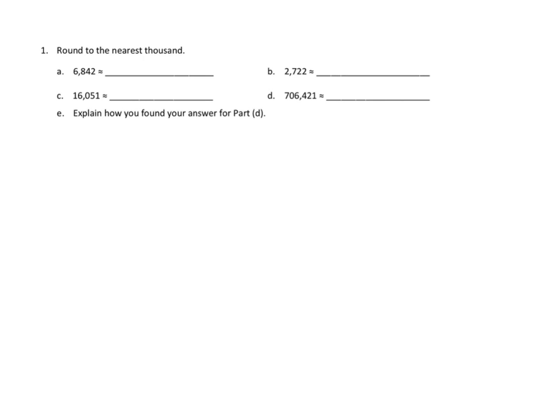Problem number one asks us to round to the nearest thousand. I want to go ahead and do problem number one, C. We are going to round that number to the nearest thousand. And unlike in previous lessons where we used vertical number lines, today we're going to try to do it without number lines — a little bit of mental math.